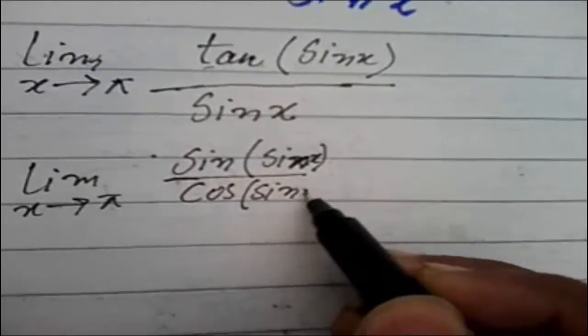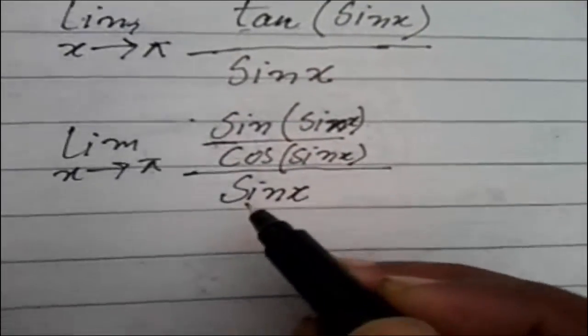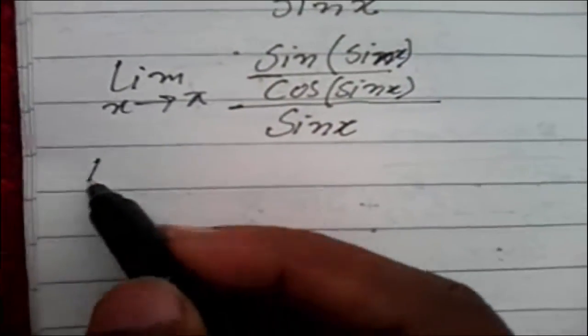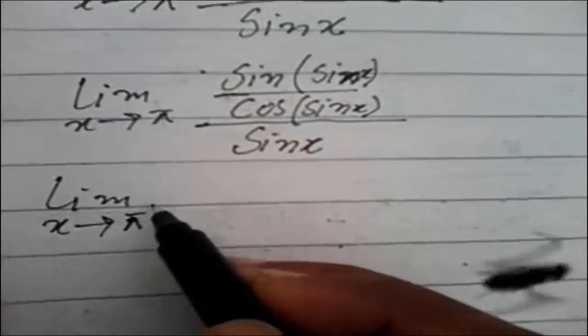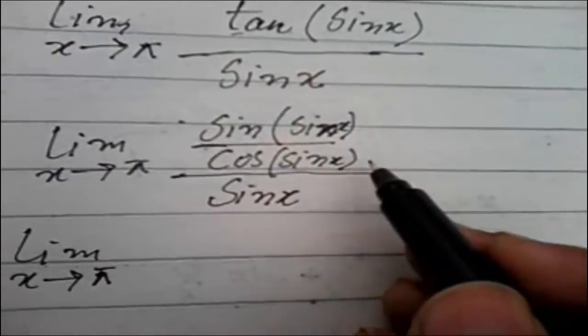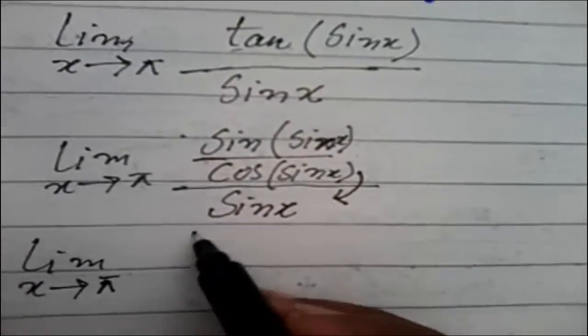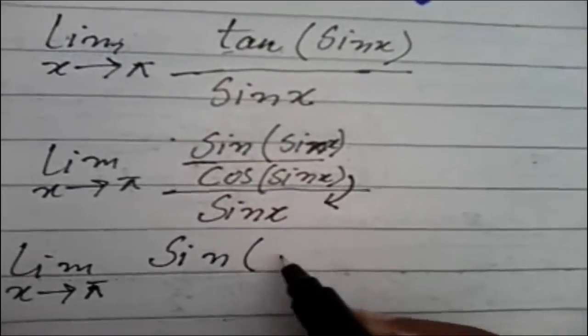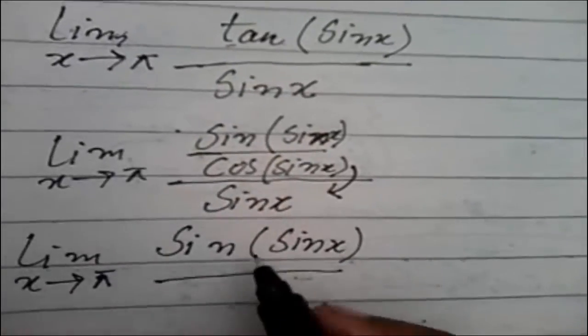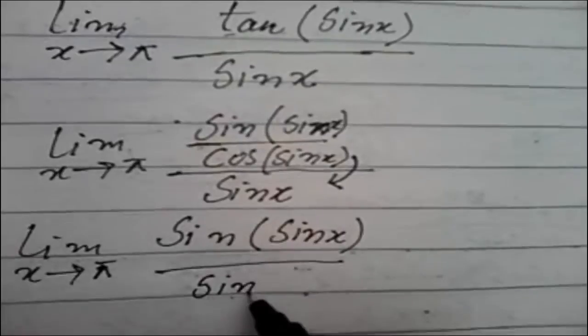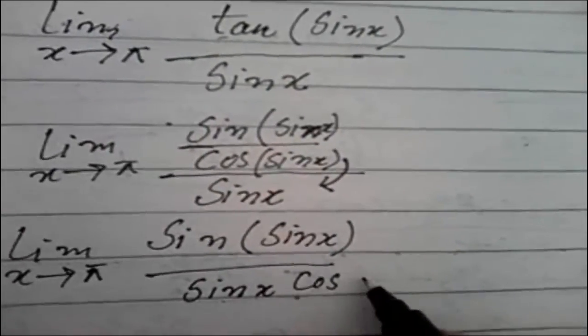...sin(x) into sin(x) over cos(sin(x)) and whole over sin(x). Okay, and limit x approaches to π. We can write it here down, it's a mathematical rule. So it will become sin(x) is already here, and cos(x) is here.